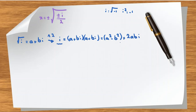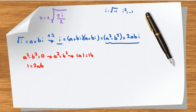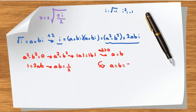Equating real and imaginary parts: the real part gives a squared minus b squared equals 0, so a squared equals b squared, meaning the absolute value of a equals the absolute value of b. The imaginary part gives 2ab equals 1. Since ab is positive, a and b have the same sign, so a equals b. Combined with ab equals one half, we get a equals b equals plus or minus 1 over root 2.